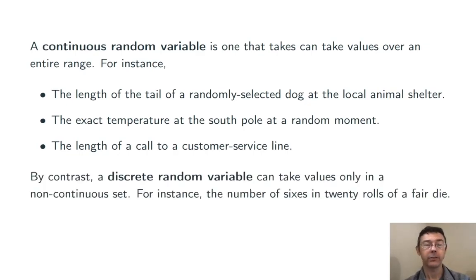By contrast, a discrete random variable can take values only in a non-continuous set. For example, roll a die 20 times and count the number of sixes.